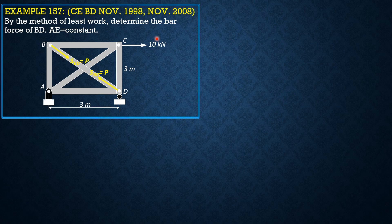Considering the entire system, summation of moments about A equals zero. We can solve RD: RD times 3 equals 10 times 3, so RD is 10 kN upward. Summation of horizontal forces gives 10 kN obviously. Summation of forces in Y gives AY equals 10 kN downward.